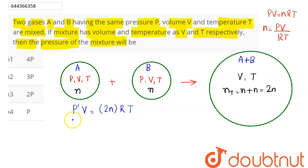So we can say P' into V is equal to 2 into n value we have calculated as PV divided by RT, into RT. Hence RT and RT cancels out, V and V cancels out.